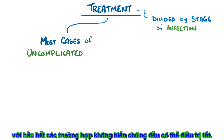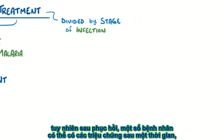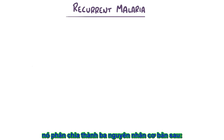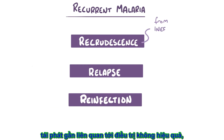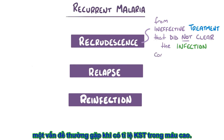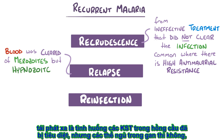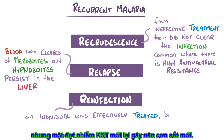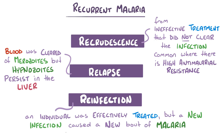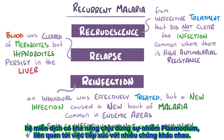For the most part, cases of uncomplicated malaria resolve with treatment. Even after recovery, some individuals can get symptoms after a period of time — called recurrent malaria — which is broadly divided into three underlying causes: recrudescence, relapse, and reinfection. Recrudescence refers to ineffective treatment that didn't completely clear the infection, a problem common when there are high rates of anti-malarial resistance. Relapse refers to situations where the blood was cleared of merozoites but hypnozoites persisted in the liver and then emerged to cause more problems. Reinfection is when an individual was effectively treated but a completely new infection caused a new bout of malaria, a problem common in endemic areas since a single infection doesn't make a person immune to malaria.